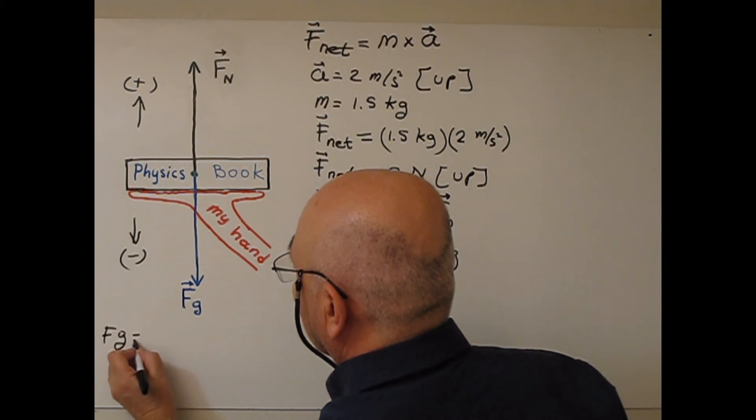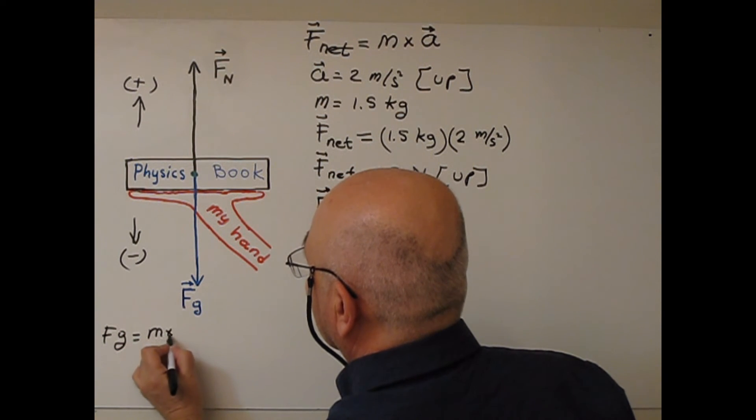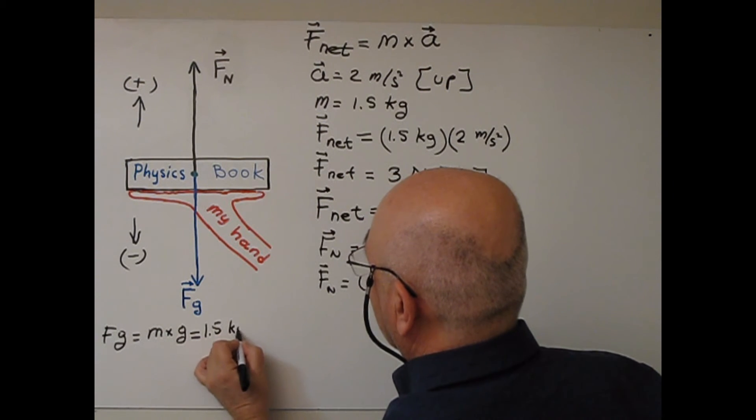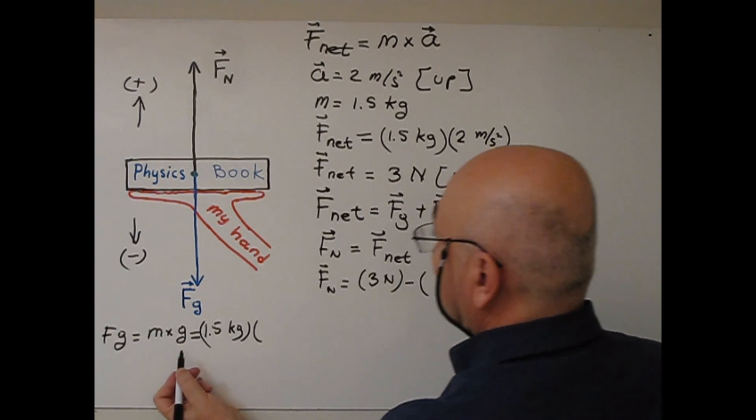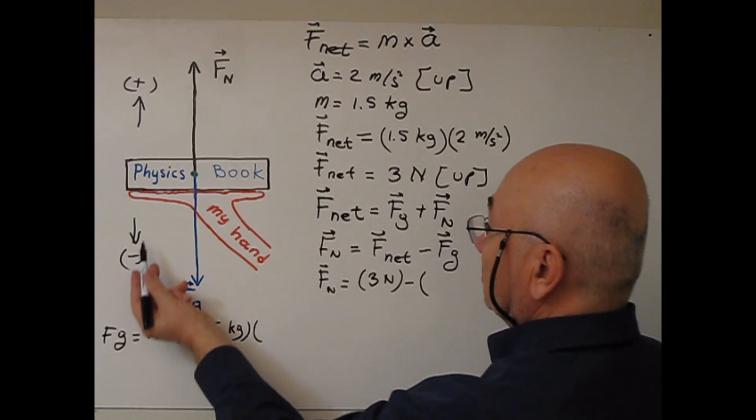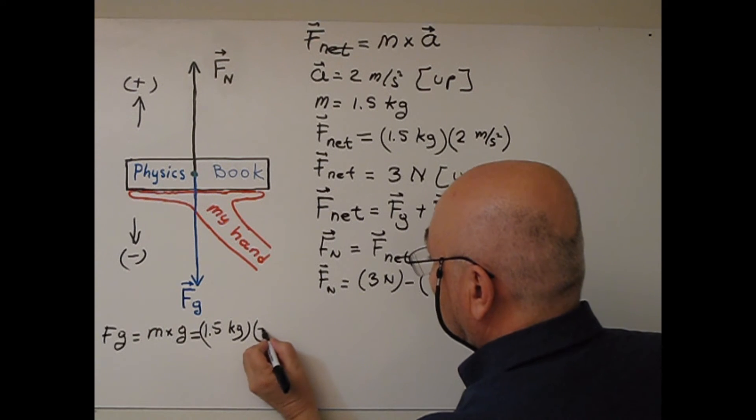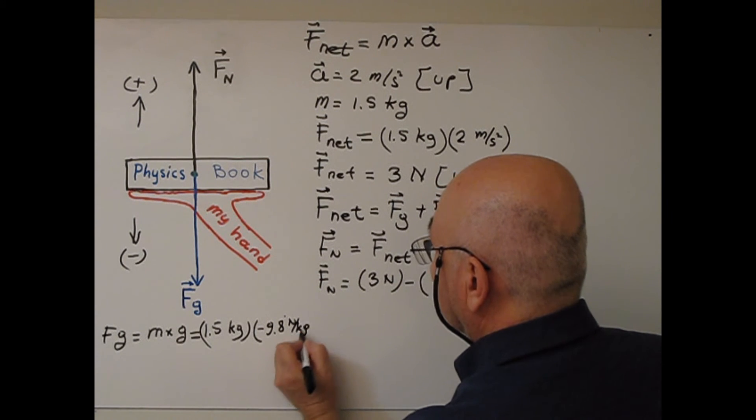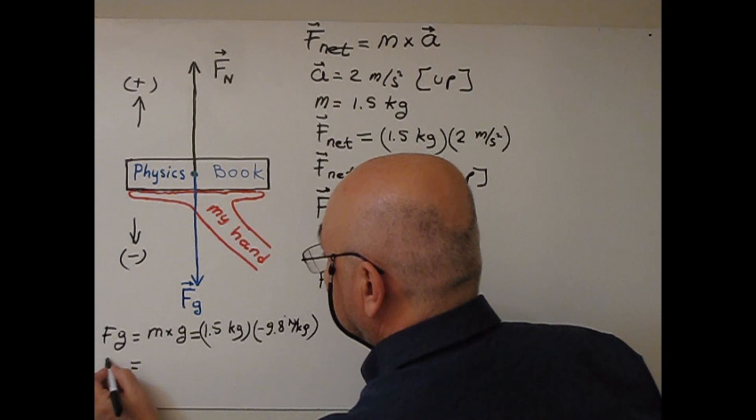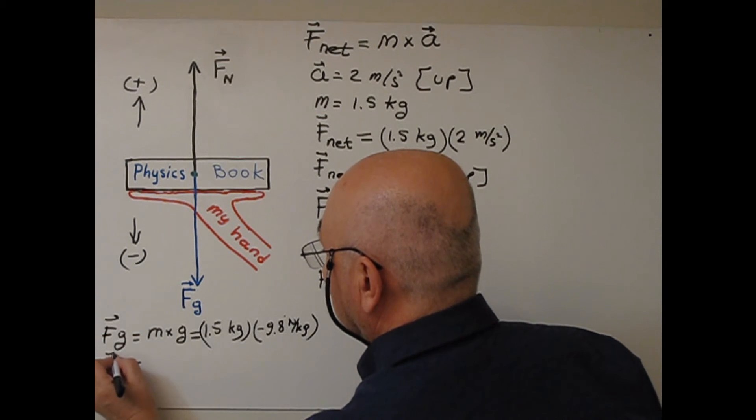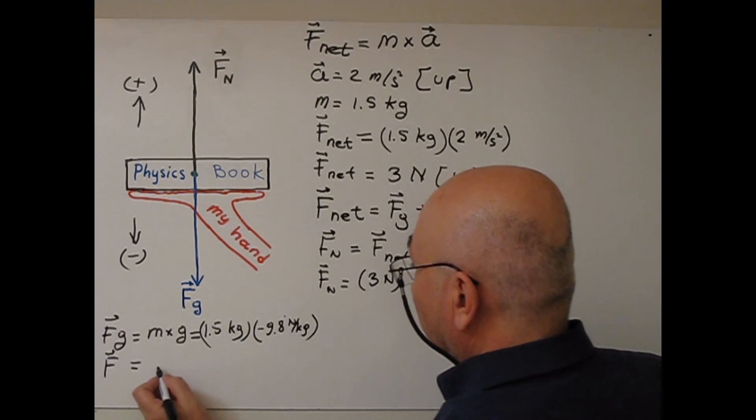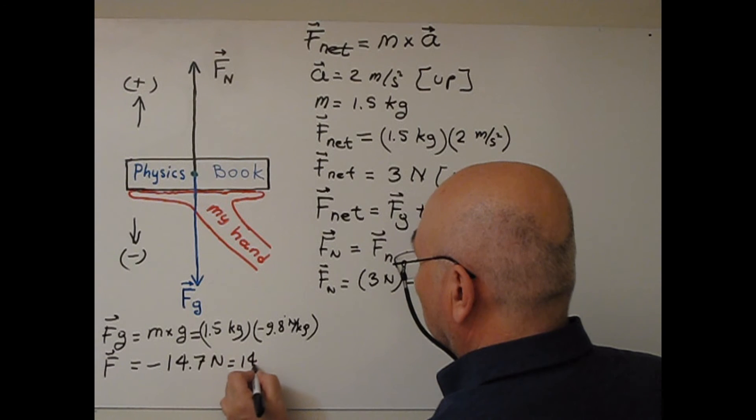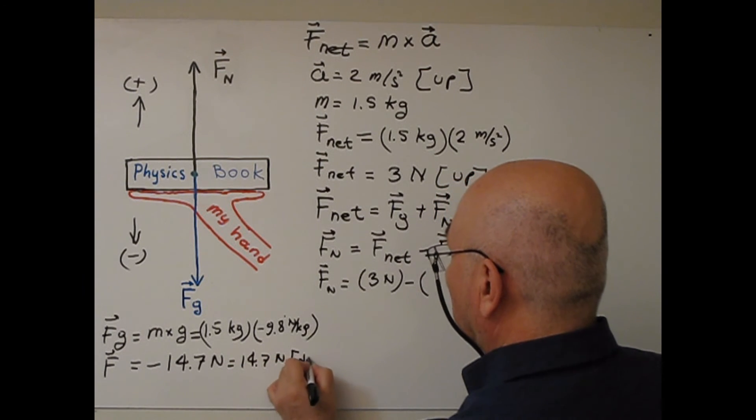Fg will be M times G. M is 1.5 kilogram. So G is, because gravitational field strength points down, minus 9.8 newton per kilogram. So Fg will be equal negative 14.7 newton or 14.7 newton down.